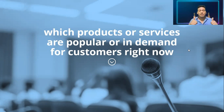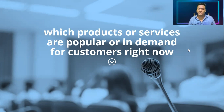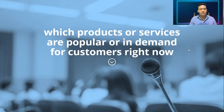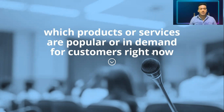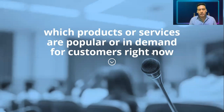Very good. Masks and hand sanitizer — what else? Home service — delivery service, very good. Let's see what the others say. Post your comment: which product or service do you think is popular or in demand right now? Ricardo says Uber — very good, Ricardo. Analyze the situation here in our country, El Salvador. What do people use most in terms of products and services these days?